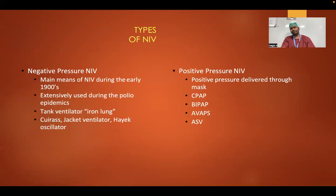There are two types of NIV: negative pressure NIV and positive pressure NIV. Negative pressure NIV is historical — it was extensively used during the polio epidemics of the 1900s, including the tank ventilator iron lung and jacket ventilator Hayek oscillator. Nowadays, everybody uses positive pressure NIV only, delivered through a mask: CPAP, BiPAP, AVAPS, and ASV.